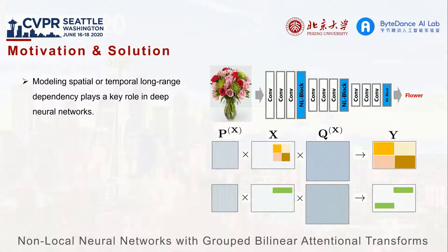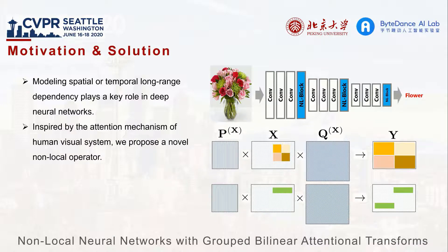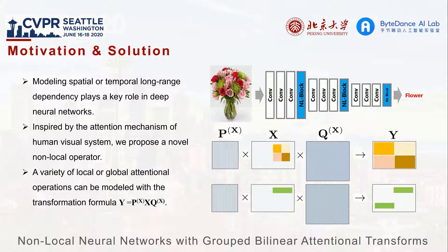Modeling long-range dependency is important in deep neural networks. This work proposes a novel non-local operator inspired by the attention mechanism of the human visual system. The core of our method is learnable and data-adaptive by linear attentional transform, termed as BA transform. BA transform can conduct a variety of operations on features, such as selective zooming and dispersing to distant positions, as shown in the right figure.